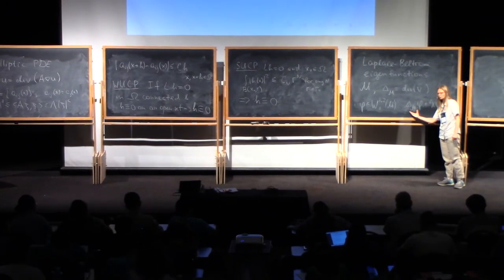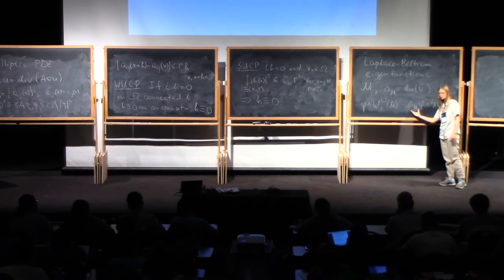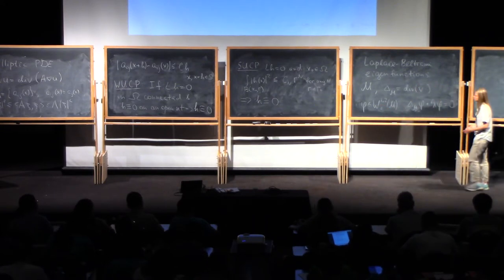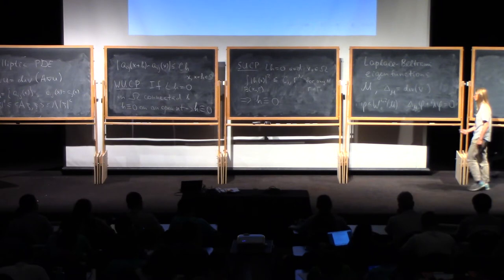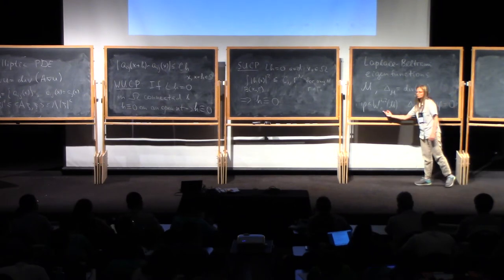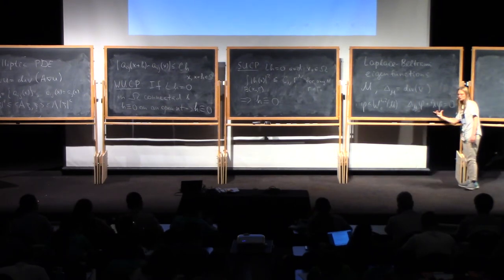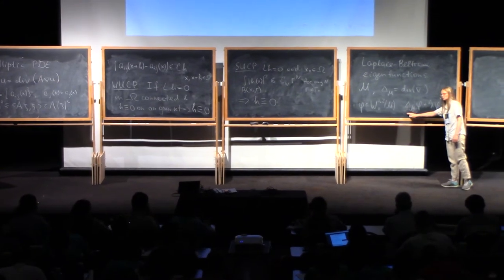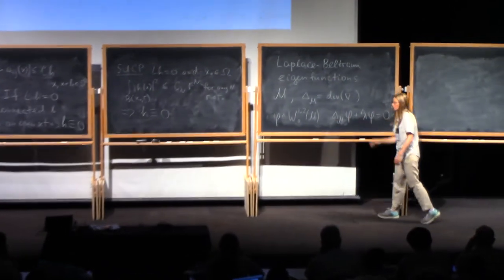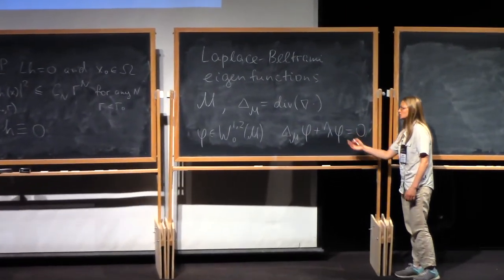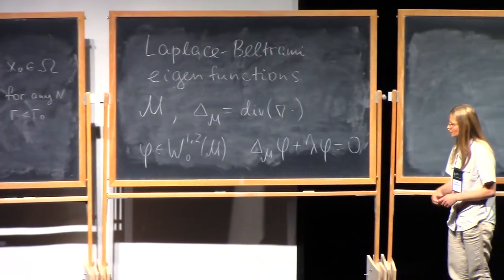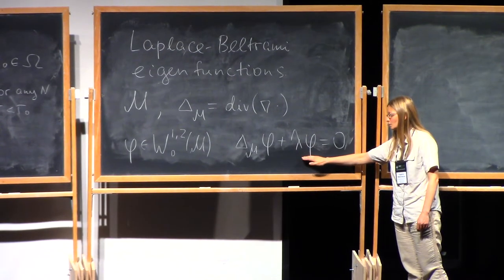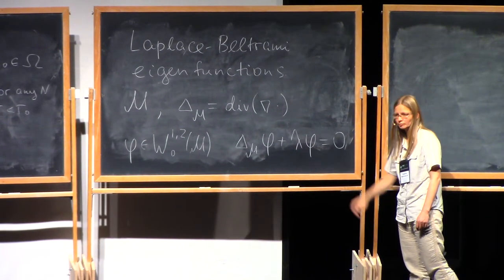Most of the time, I will talk about compact manifold M, so there is no boundary condition here. Sometimes we will assume that it's a manifold with boundary. Then we are talking about Dirichlet-Laplace eigenfunctions. For example, when M is a domain in R^n, bounded domain, you can think about this scheme as description of Dirichlet-Laplace eigenfunctions on bounded domains as well.